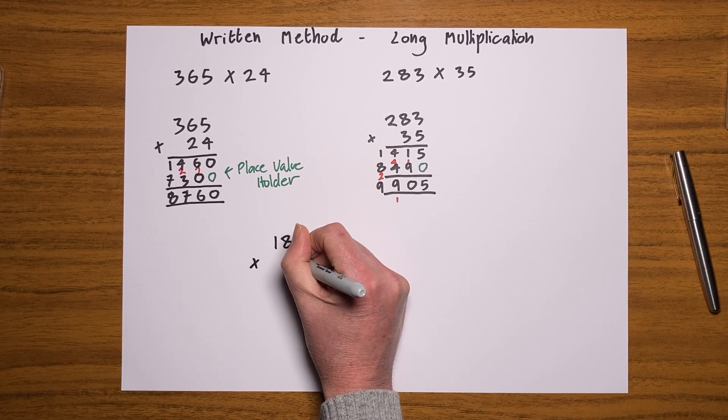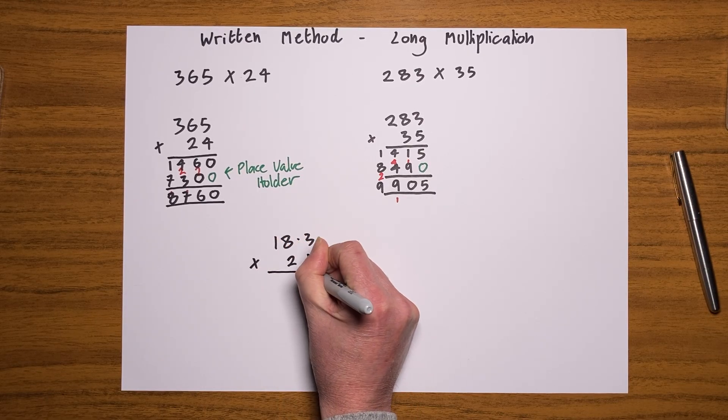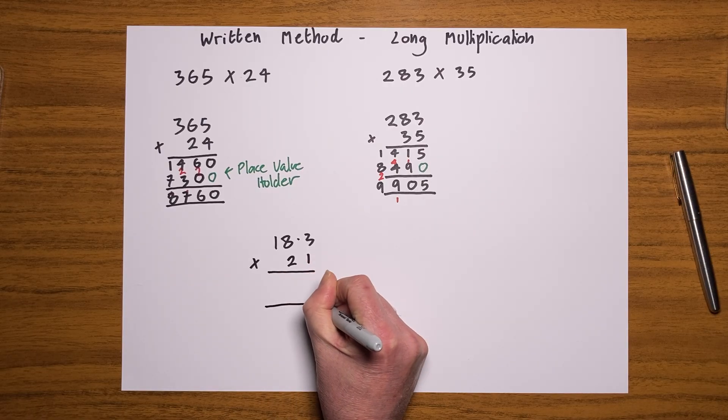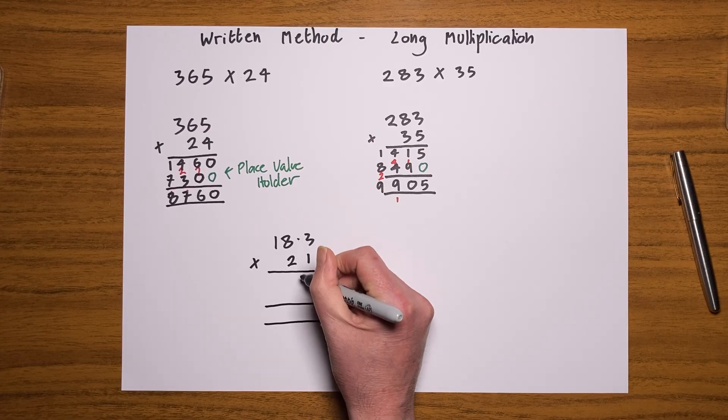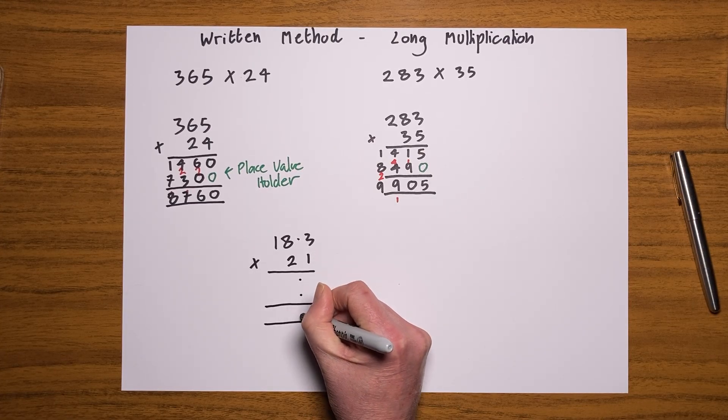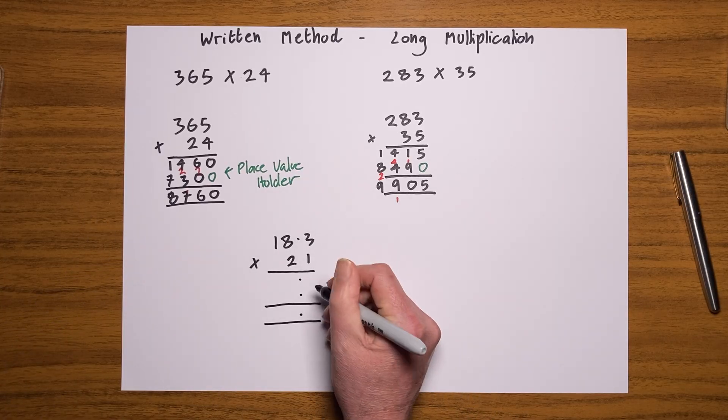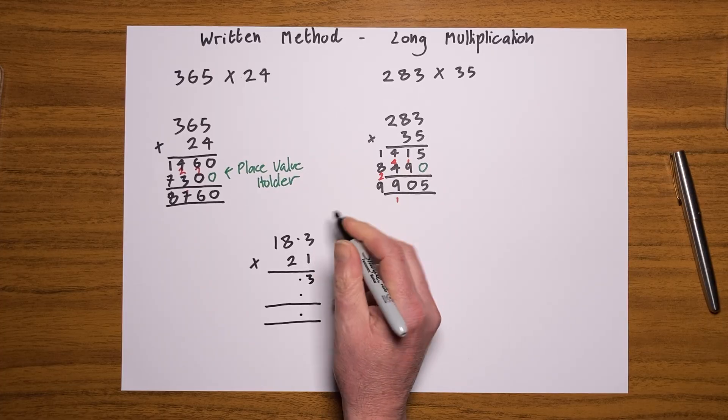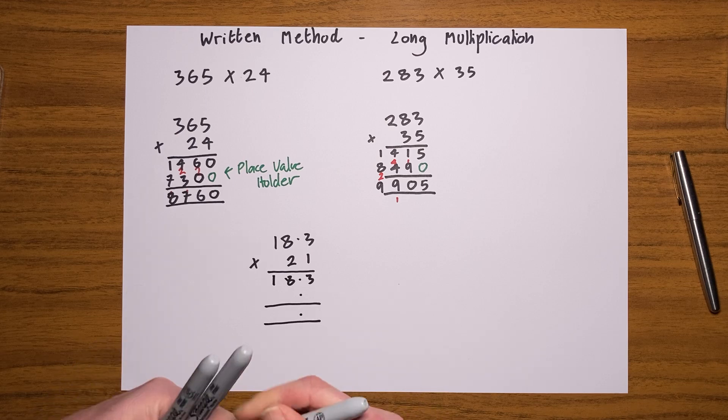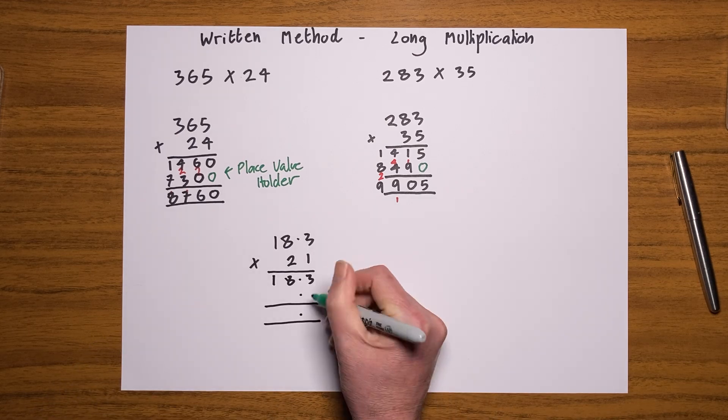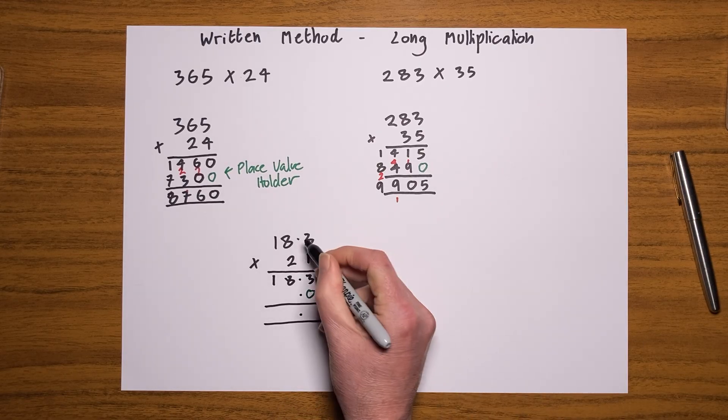Times 21. Okay, so notice I've only used a decimal in one number, and as long as I put my decimal in the same place going all the way down here, I'll be fine. Right, let's go for it. One threes is three, three ones are three, eight ones are eight, ones one is one. That line was nice and easy.